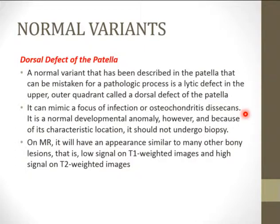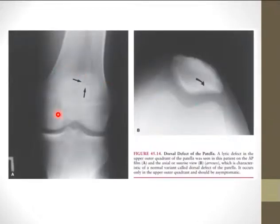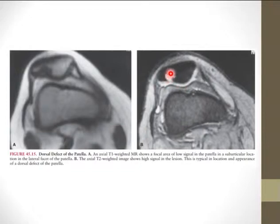A normal variant called the dorsal defect of the patella can be mistaken for a pathologic process. It is a small defect in the upper outer quadrant of the patella — the location is the key finding. It can mimic a focus of infection or osteochondritis dissecans. On MRI it can have an appearance similar to many bony lesions — low on T1 and high signal intensity on T2-weighted images — but it is a normal developmental anomaly and should not undergo biopsy.